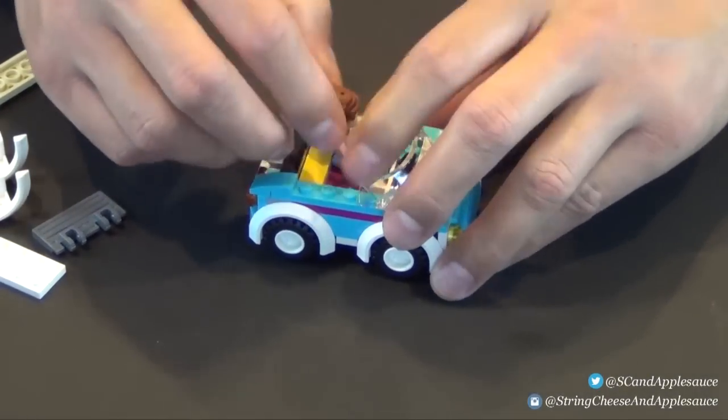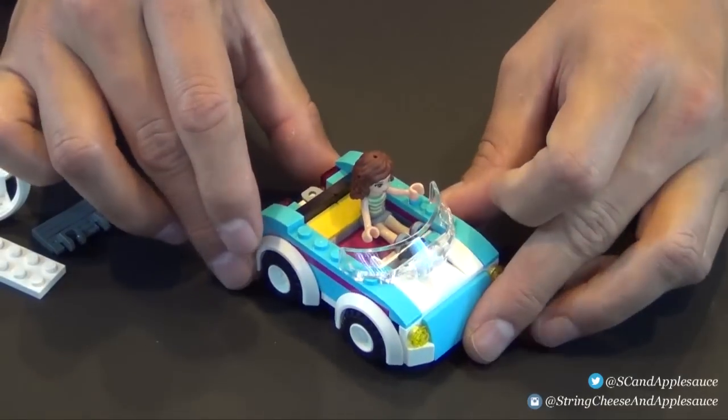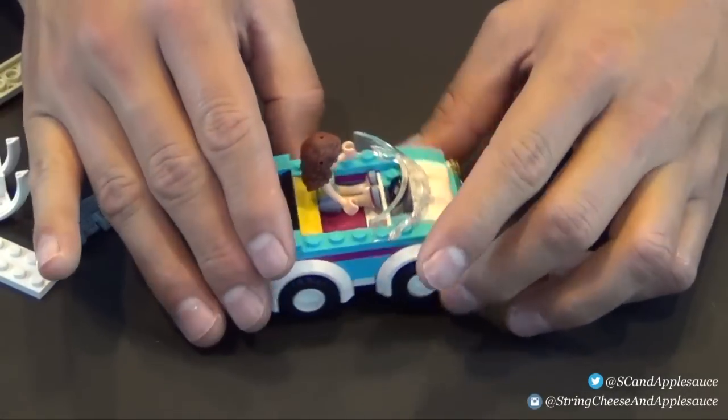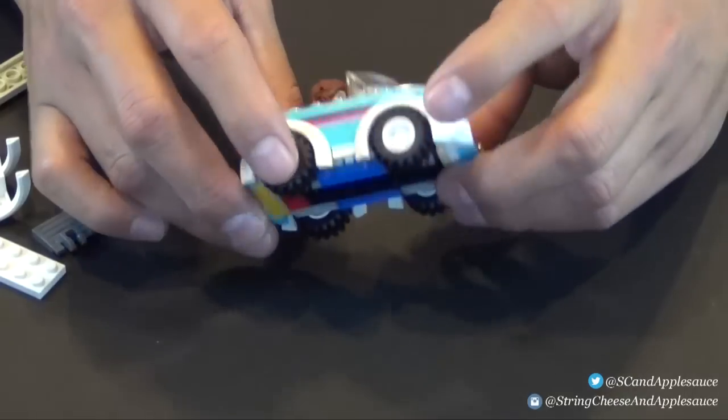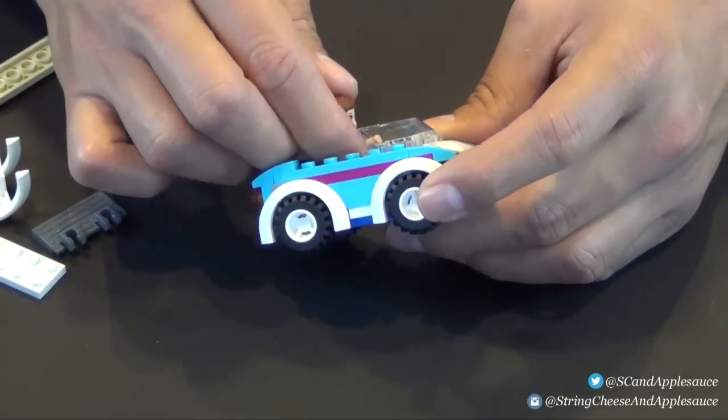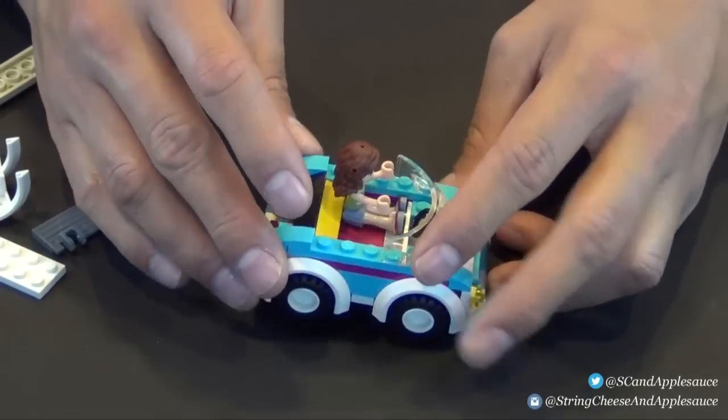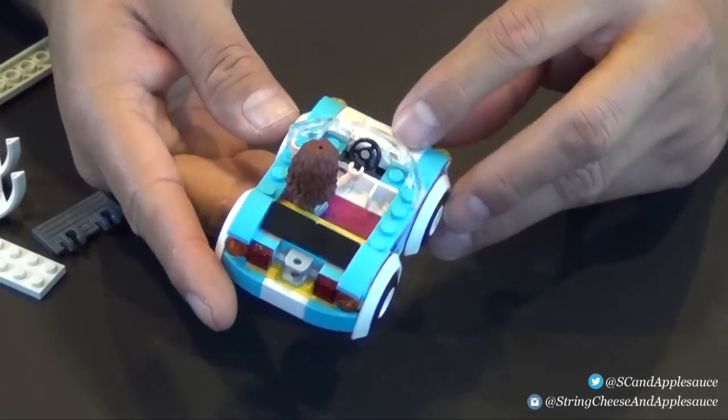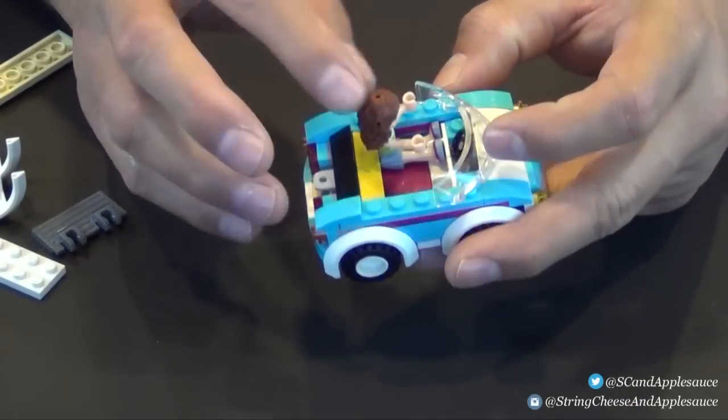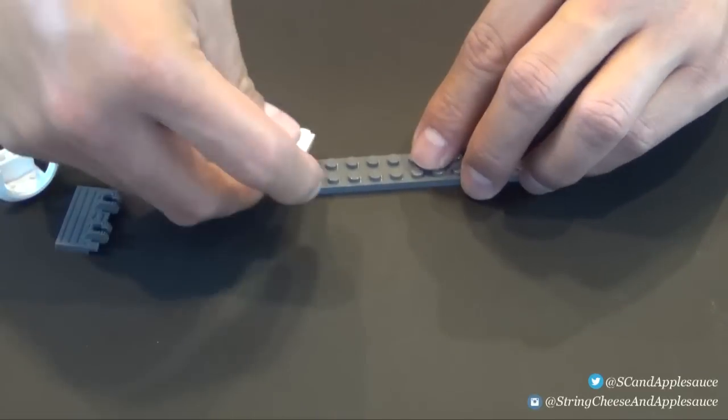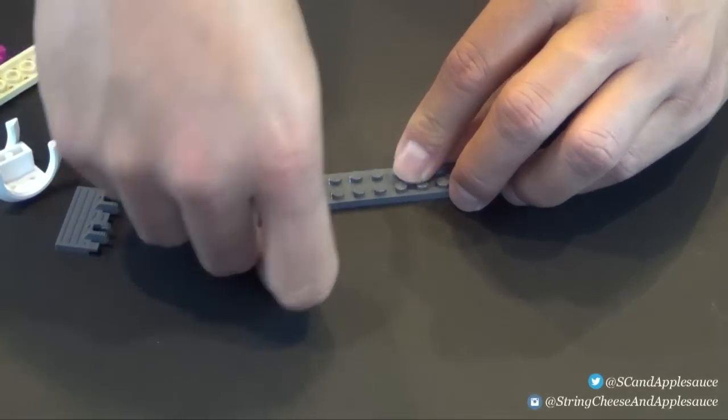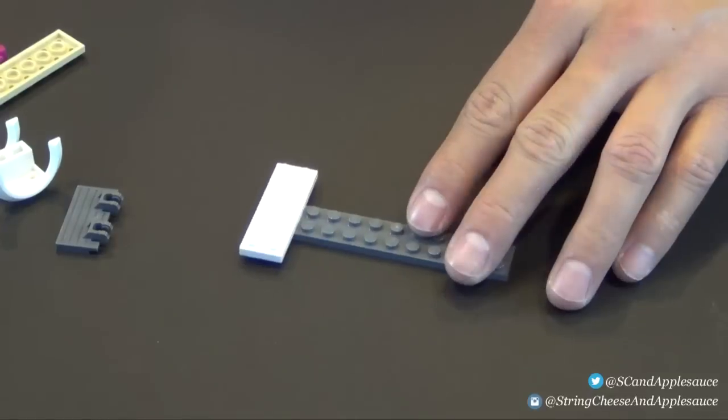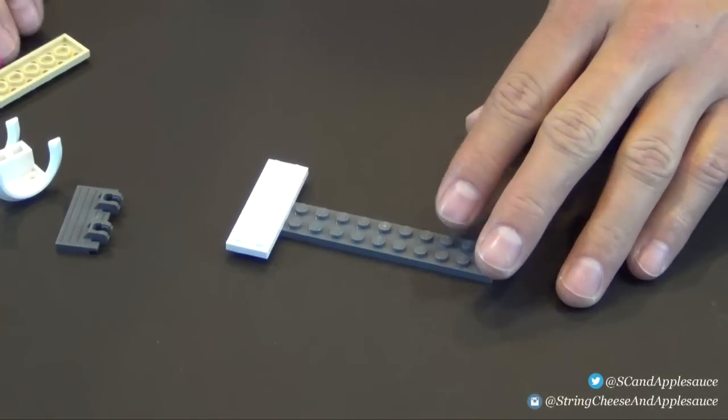A couple plates, couple more plates. Some yellow cheese slopes on the back here, that's the back of the seats. Of course a few more plates. Some slopes, some black cheese slopes. On the front we have this little hood ornament type piece with some more slopes, and the slopes really do give it a clean aerodynamic look. Still not getting any bigger, it's a tiny tiny little car.